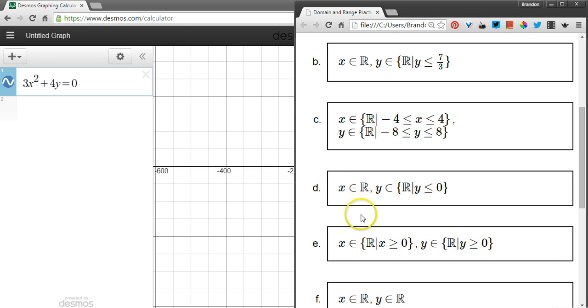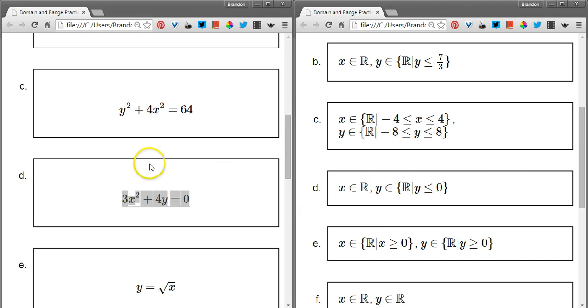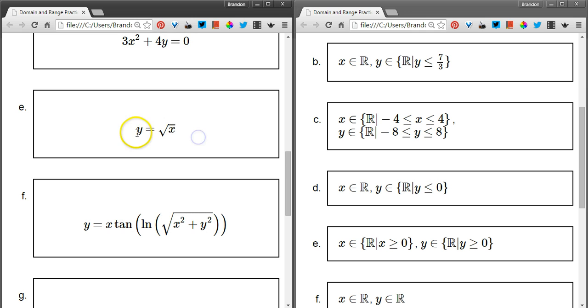So if I look over here at which question is this, question D. x is an element of the reals, all real numbers are okay. y is an element of the reals except that y has to be less than or equal to 0. That's its maximum.